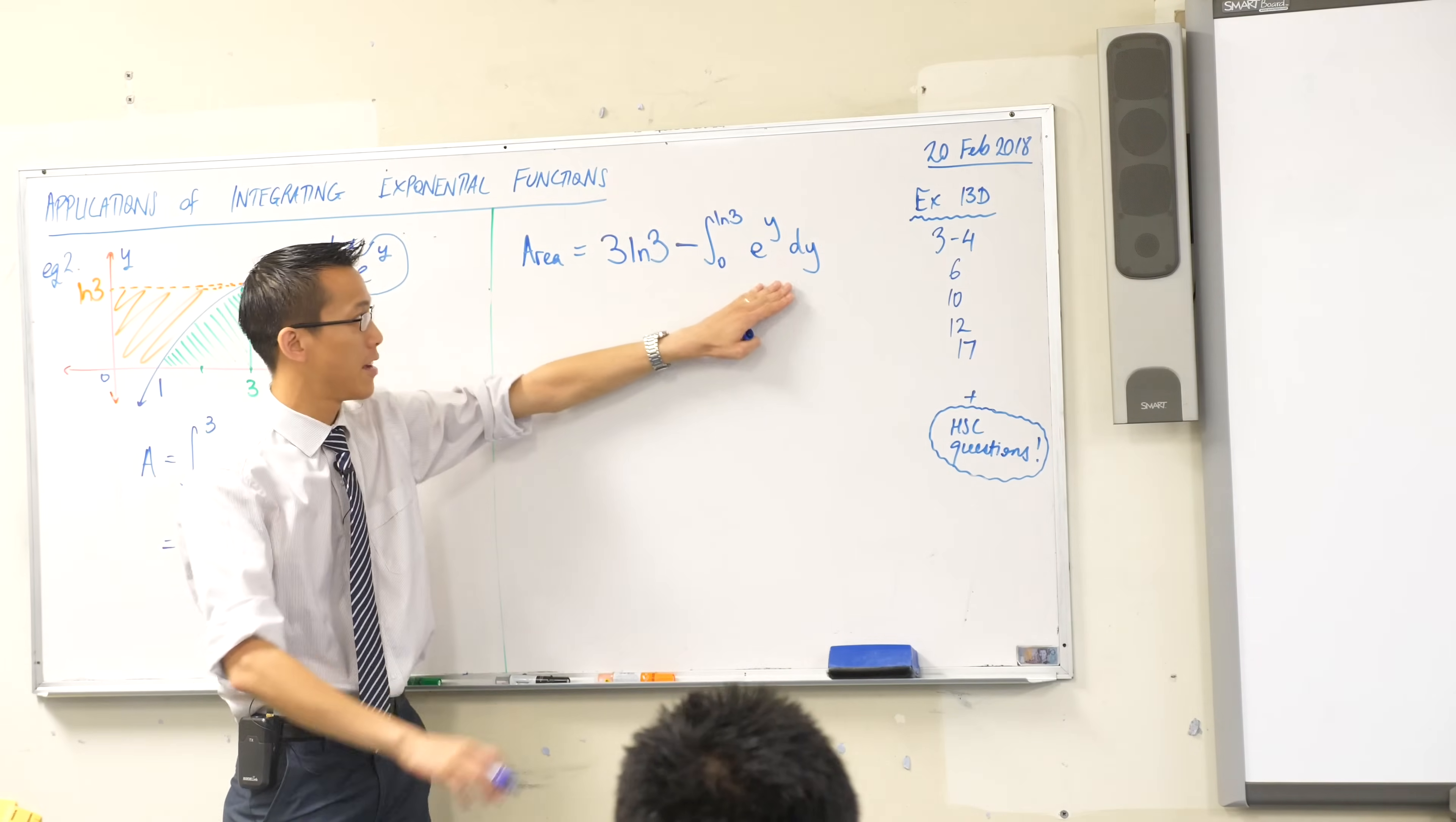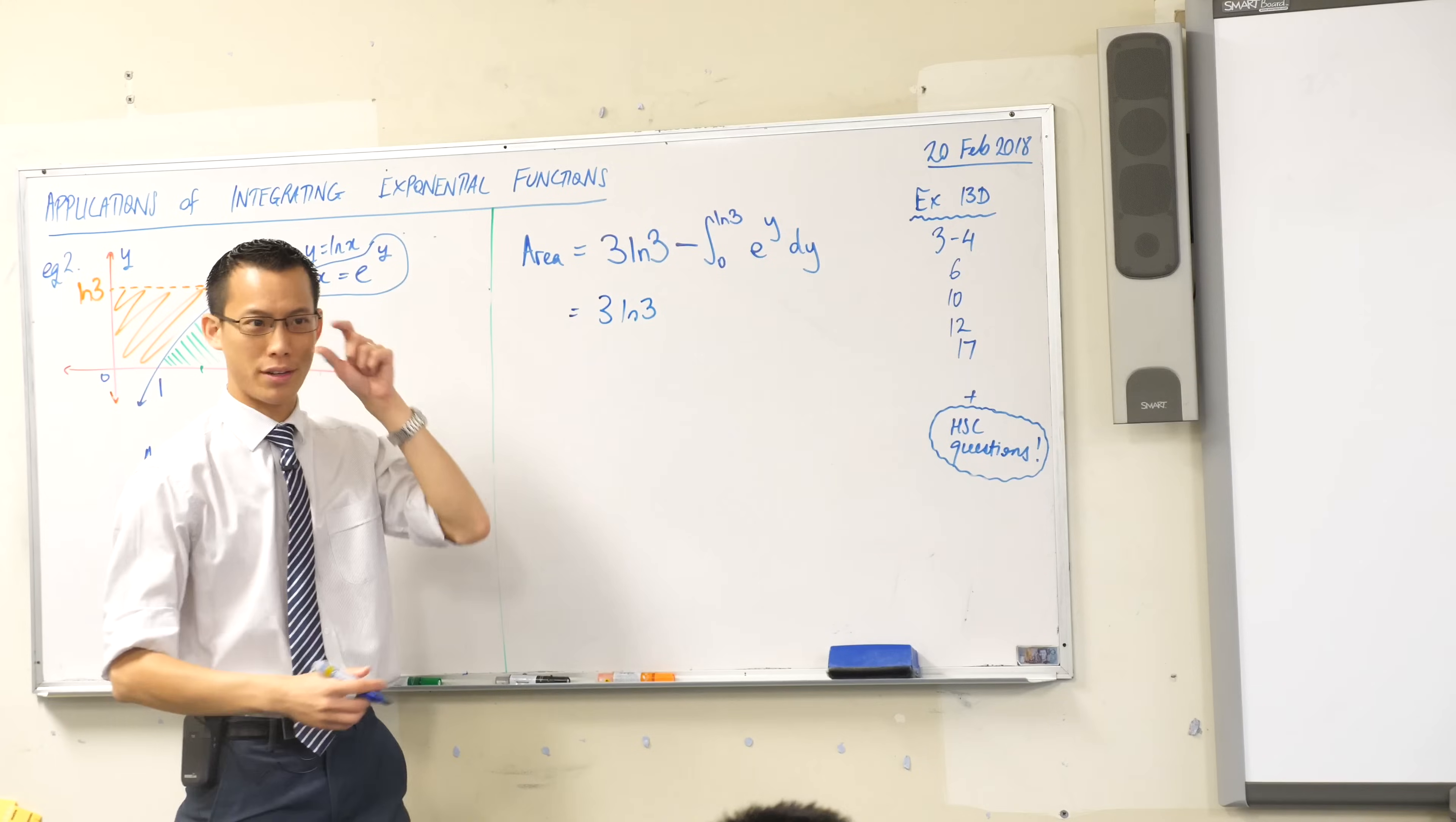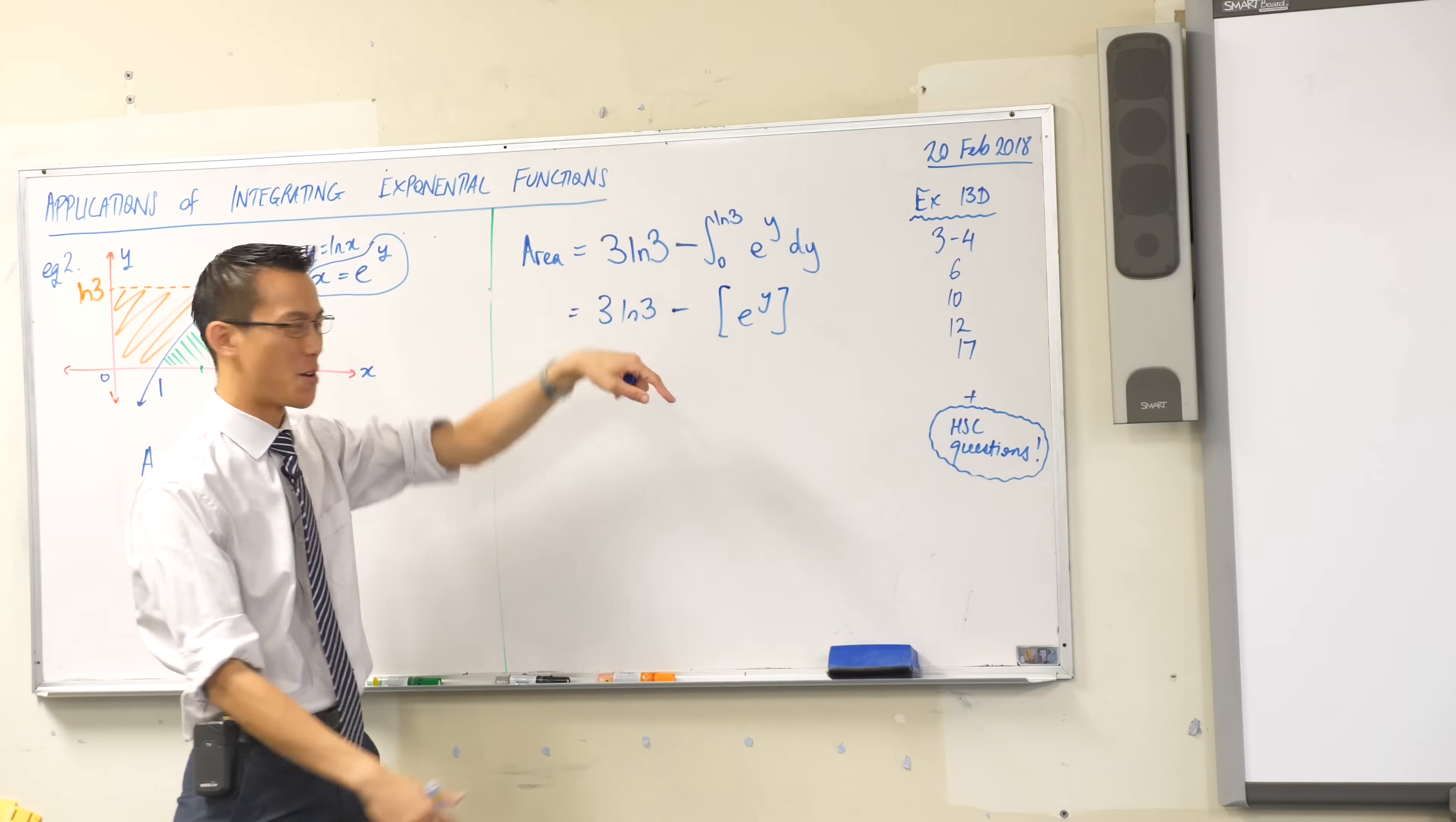Just before we move on, notice how this forming, this thing, was all the hard part, right? You've got y boundaries, you've got a function of y, you're integrating with respect to y, everything works. Yeah, let's evaluate it. 3 log 3 is still hanging out the front doing not very much at the moment. Take away what's the primitive of e to the y? It's just e to the y. I love these exponential functions, it's so nice to deal with, okay? You've got your upper and lower boundaries, 0 to log 3.